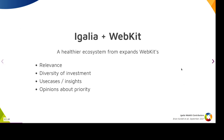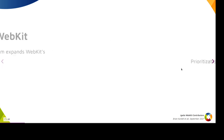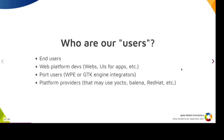WebKit and Igalia work really well together because we help expand WebKit's relevance and also its diversity of investment. With that comes new insights and use cases that we consider, and a way to think about different things that we can prioritize because we can afford to. We think that's really important because prioritization is really, really hard. It's not always immediately obvious where the investment should be, as we have many, many users throughout the system.